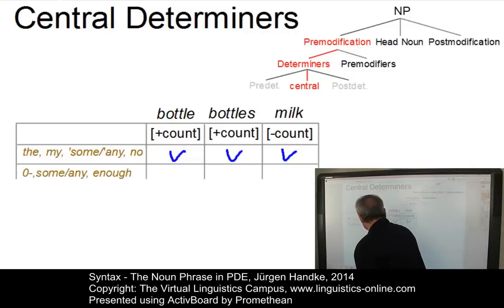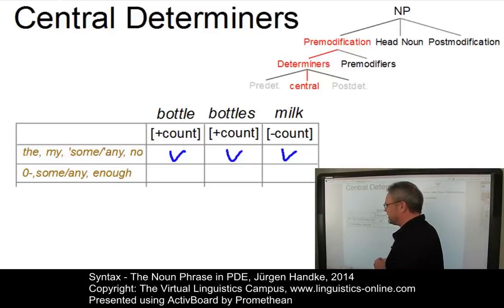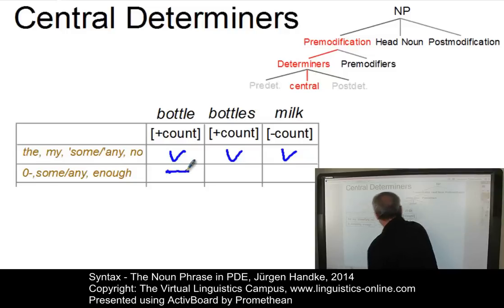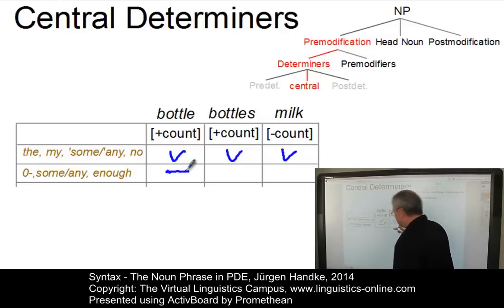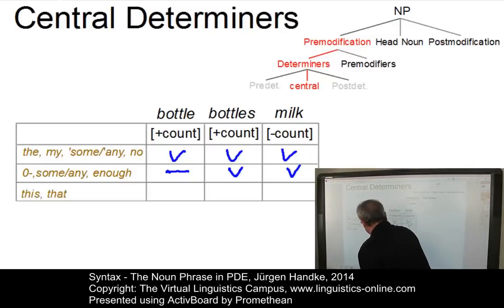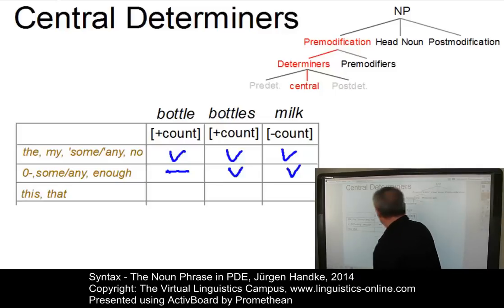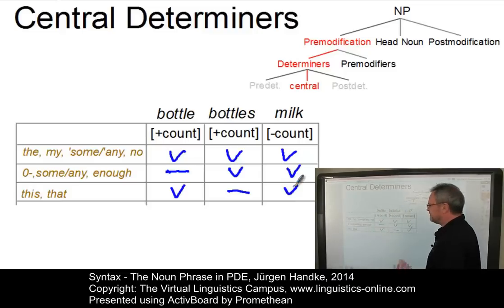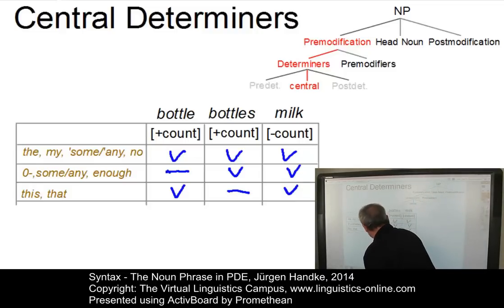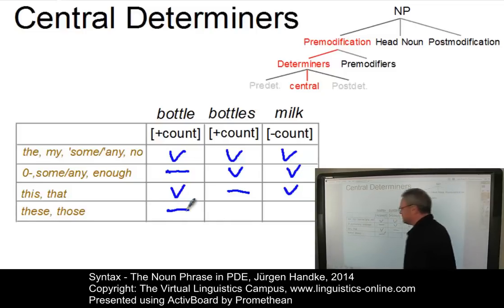A second class contains the zero article, 'some' and 'any' in their weak form, and 'enough'. Here it is impossible to say 'enough bottle', but 'enough bottles' and 'enough milk' are both possible. A third class of central determiners contains 'this' and 'that' in the singular form — so we can have 'this milk' and 'this bottle', but not 'these bottles'. The opposite applies to 'these' and 'those', which are used only in the plural: 'these bottles', but not 'these milk'.